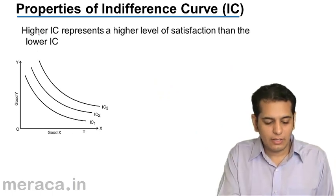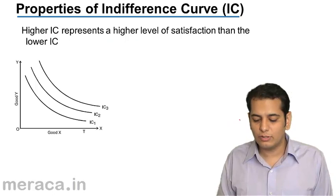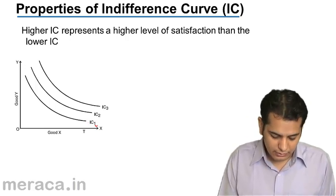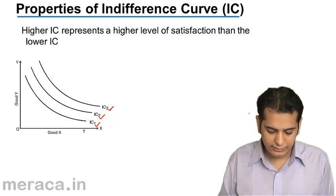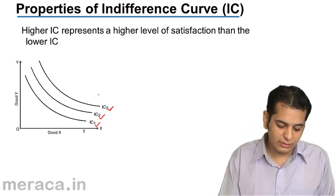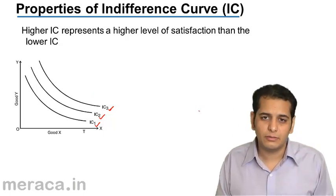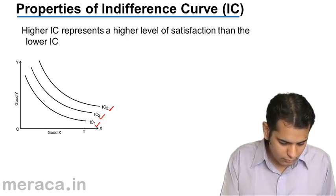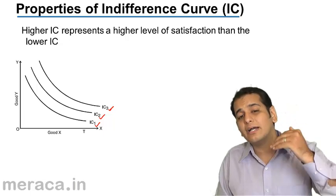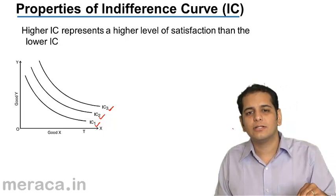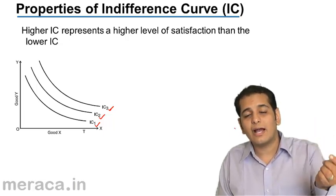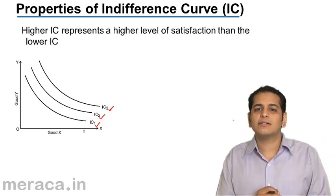The next property is that a higher indifference curve represents a higher level of satisfaction than a lower indifference curve. In this graph we have three indifference curves: IC1, IC2, and IC3. IC1 is the lowest and IC3 is the highest, while IC2 lies in between. IC2 and IC3 are higher than IC1, which implies they will give a greater level of satisfaction because the consumption at IC2 and IC3 will be more than at IC1.